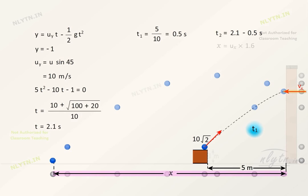So the horizontal distance covered in this period will be equal to the horizontal velocity times 1.6, that is 16 meters.